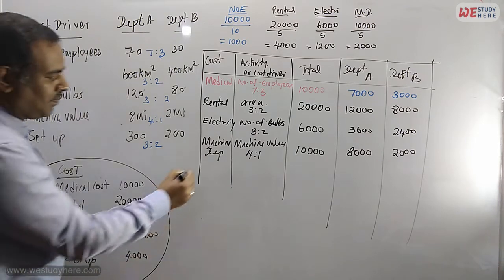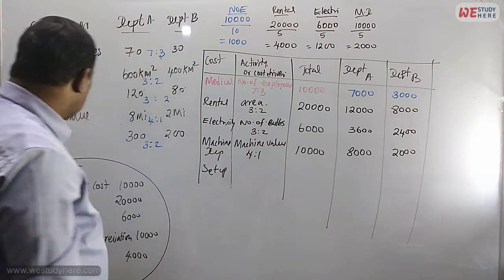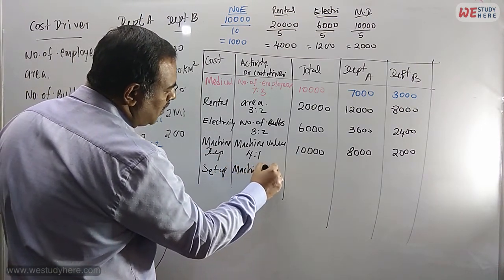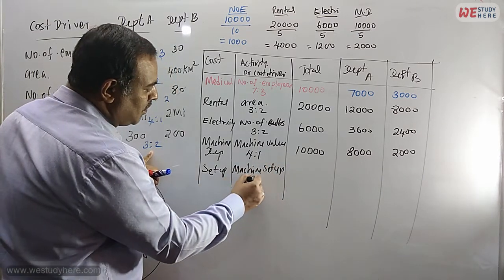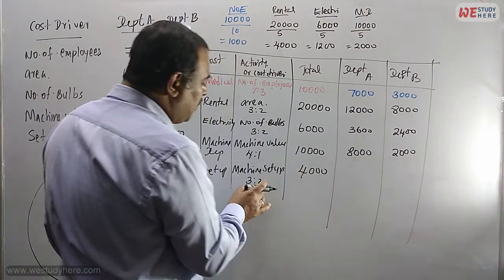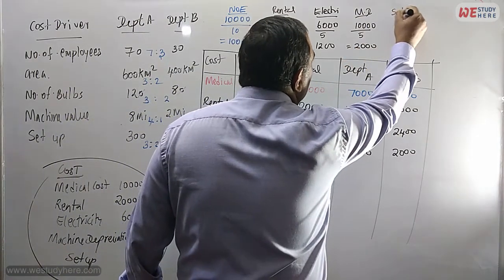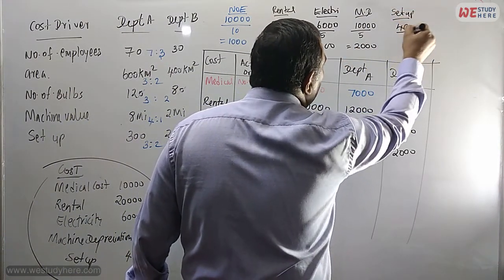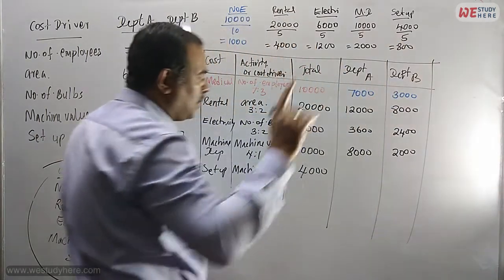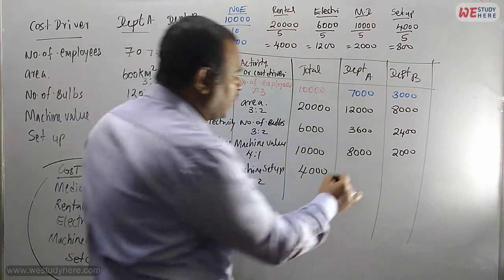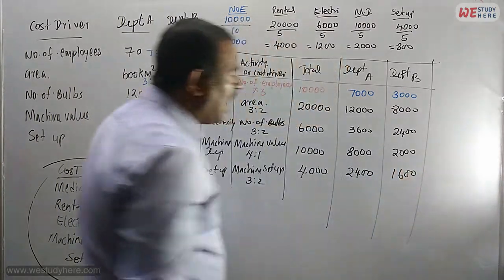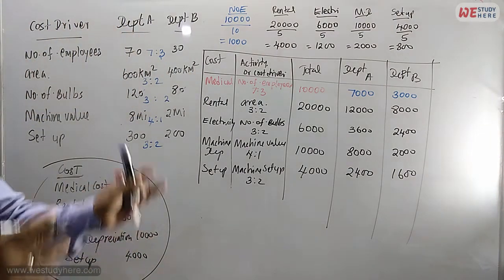The last one is setup. The cost driver is machine setup, with ratio 3 is to 2. Setup cost total is 4,000. Divide 4,000 by 5 (since 3 + 2 = 5): that gives 800 per portion. Department A: 3 × 800 = 2,400. Department B: 2 × 800 = 1,600.